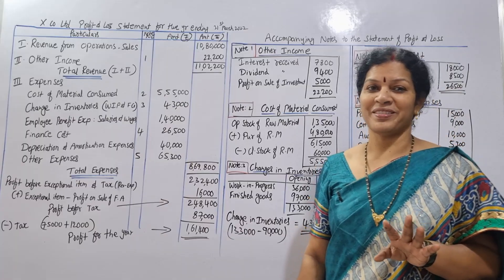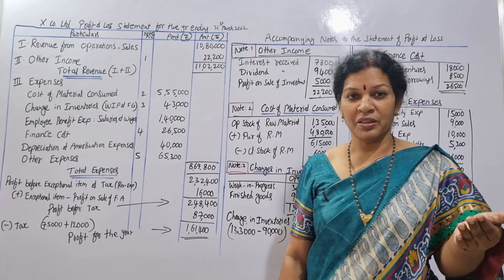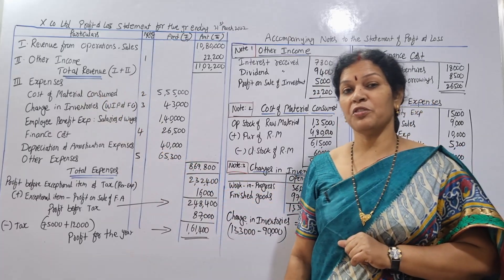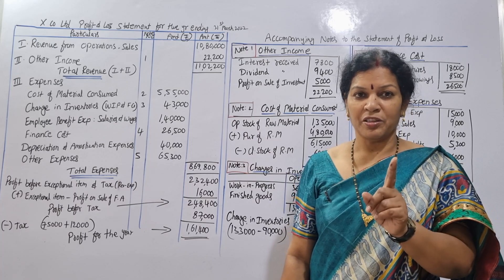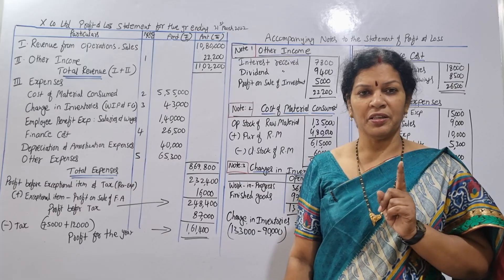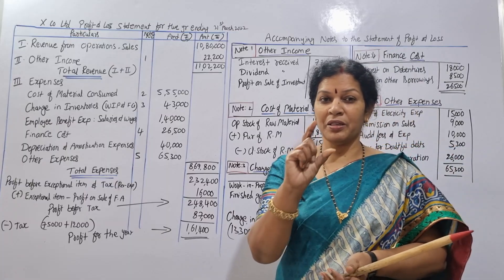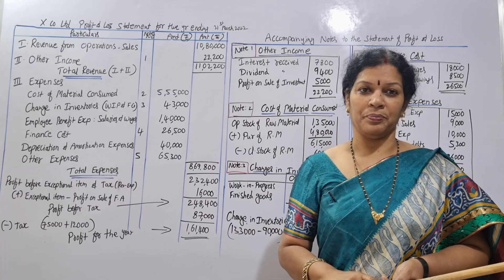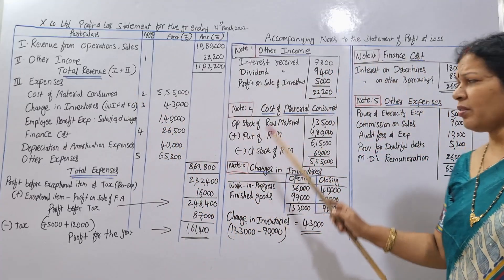Now for the expenses section, the third item is expenses. First is cost of material consumed. Cost of material consumed is related to raw material. We open with the opening raw material, then add purchases of raw material, then minus closing raw material. For this, we use working Note Number 2.